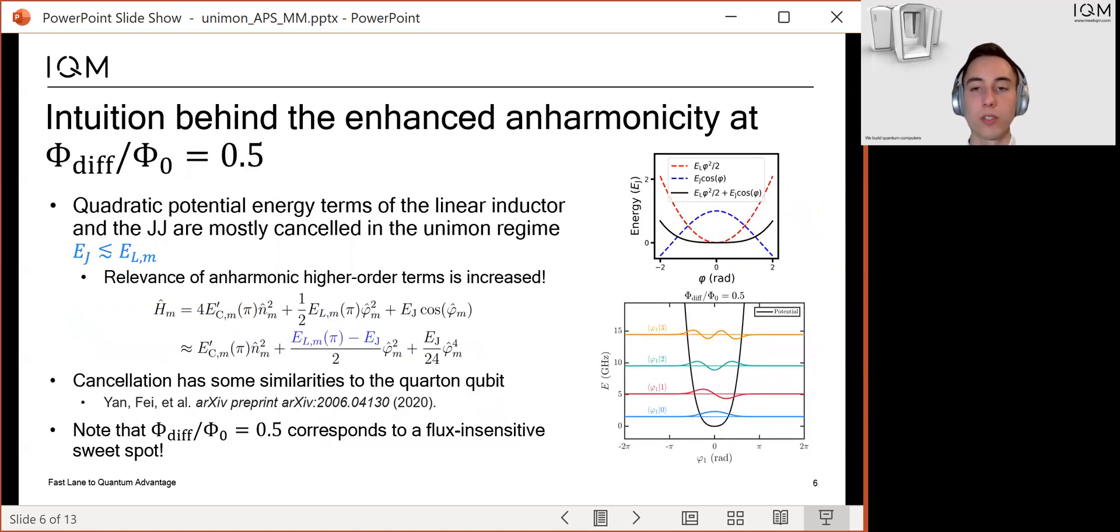Now I try to provide you some intuition why the anharmonicity is enhanced at the half-flux quantum point. At this point, we can make a fourth-order approximation for the Hamiltonian as shown on the slide. In the Unimon regime, the Josephson energy is almost as large as the inductive energy.